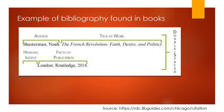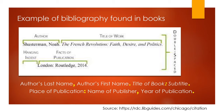Here is an example of a bibliography found in books. You should take note of the author's name, title of work, and the facts of publication. If you're wondering how it should be written, here is how. Take note that this is for books with one author only. For the author, it should be: author's last name, comma, author's first name, period. Then in italics: title of book, colon, subtitle, period. Hanging indention: place of publication, colon, name of publisher, comma, year of publication, period.